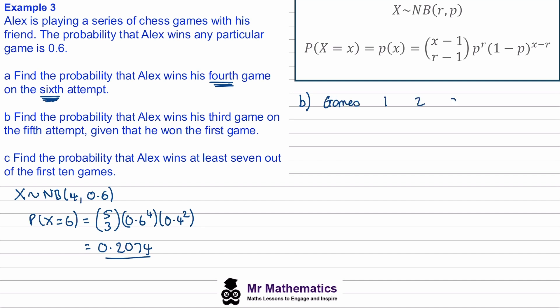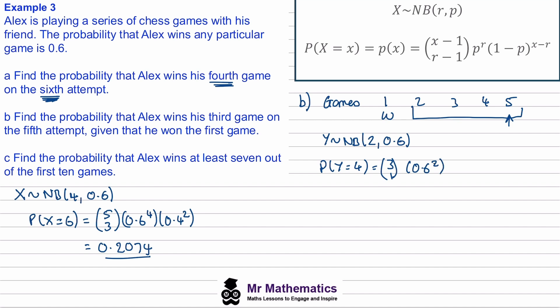For part b, listing the five games: we're told he wins game one, so we focus on the remaining four games, needing two more wins with the final win on the last game. We define Y ~ NB(r=2, p=0.6) over four games. P(Y = 4) = 3 choose 1 × 0.6² × 0.4² = 0.1728.